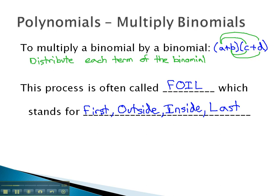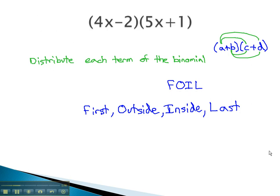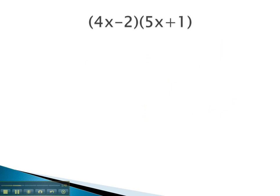Let's take a look at some examples where we distribute both terms of the binomial into the other set of parentheses. In this example, we'll start by multiplying the 4x times the 5x, distributing the 4x through.